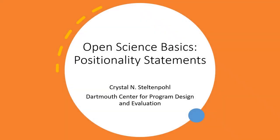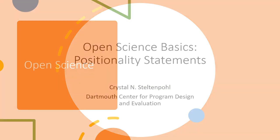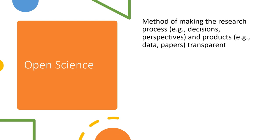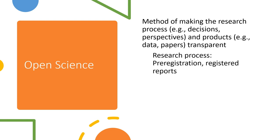Hi, my name is Crystal Steltenpol and I'm going to talk a little bit today about positionality statements and how they fit in with open science. So let's talk about the logic of open science real quick. Open science is a method, or really a set of methods, for making the research process and products more transparent. Ways that we try to make the research process more transparent is by outlining specifically the decisions that researchers make throughout a research study.